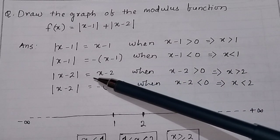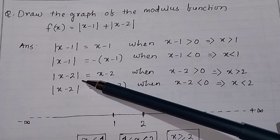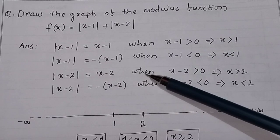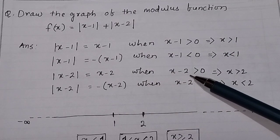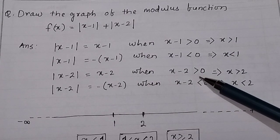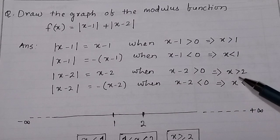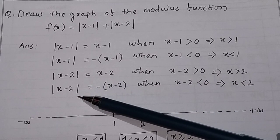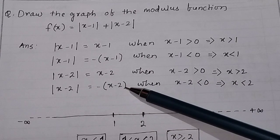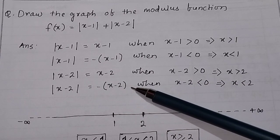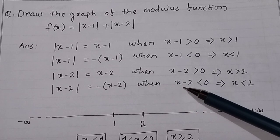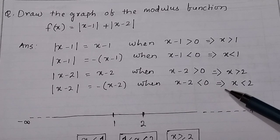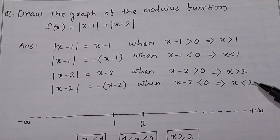Similarly, for the modulus function x minus 2: that will be equal to x minus 2 when x minus 2 is greater than 0, or x is greater than 2. And mod of (x - 2) is equal to minus(x - 2) when x minus 2 is less than 0, or x is less than 2.